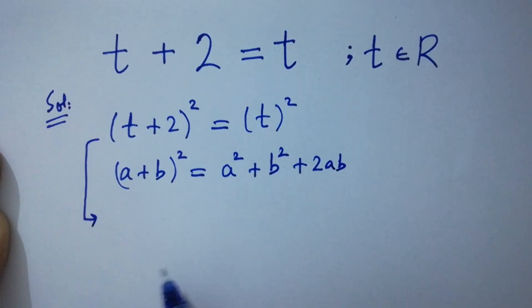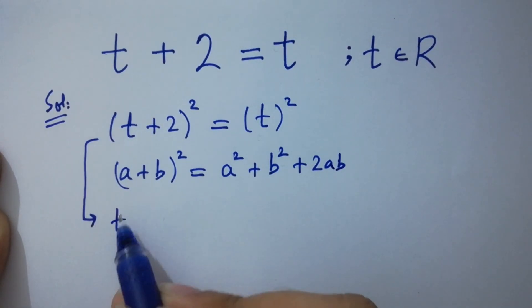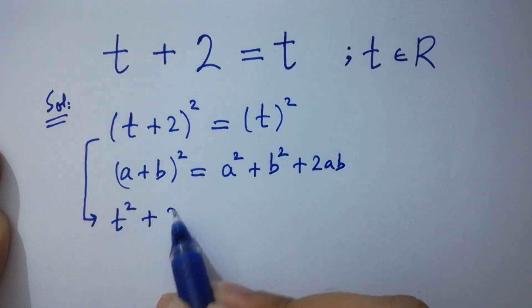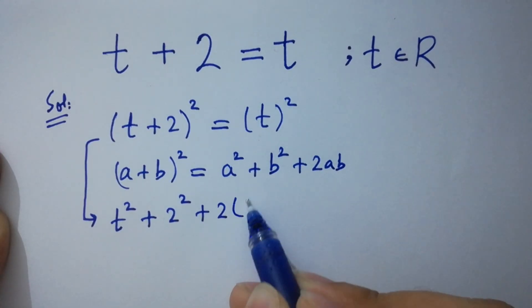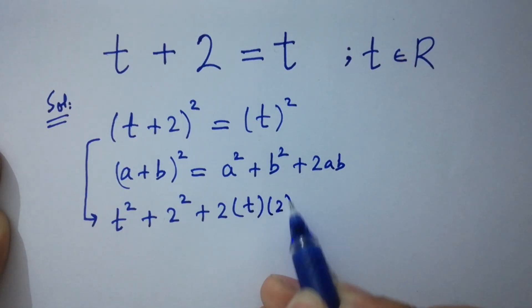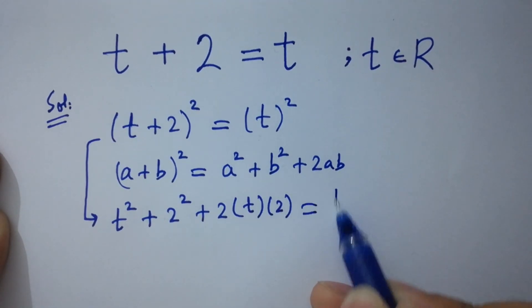Then it will be t square plus 2 square plus 2 times t times 2 equal to t square.